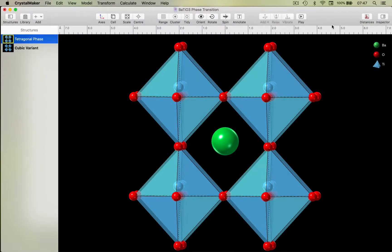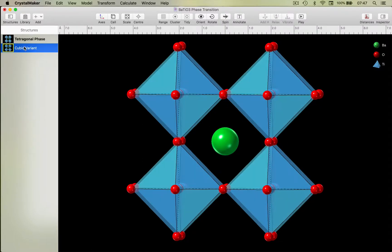Here we have two crystal structures for barium titanate perovskite, a tetragonal phase and a cubic phase.